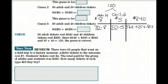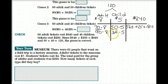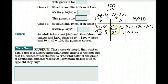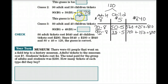For guess number two, we're going to try 90 adult tickets and 30 children's tickets — 90 times $8 and 30 times $5. First, let's check: does 30 plus 90 equal 120? Yes, it does. So 90 times 8 is 720, and 30 times 5 is 150. Does that equal $840? No, that equals $870 — so this guess is too high.